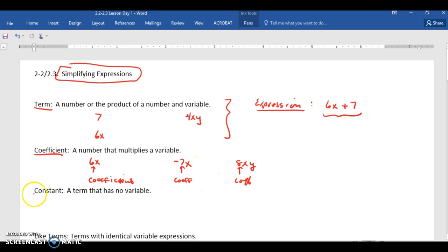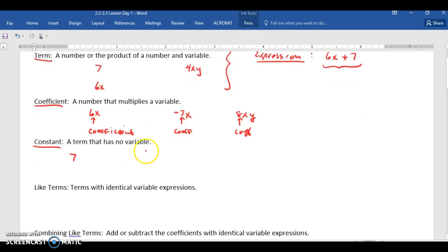Now a constant is a term that has no variable. So in the example up above, 7 is an example of a constant. There's no variable multiplying to change its value at all. Whereas 6x, x can be any number, and when you plug it in, it changes the value of that expression. So know the different vocabulary because when we use them, you need to understand them.